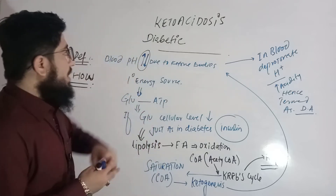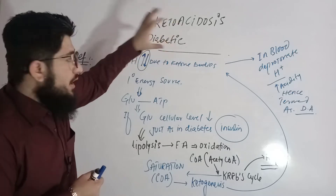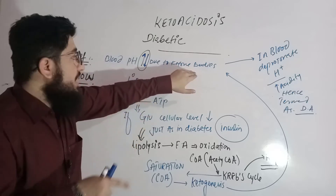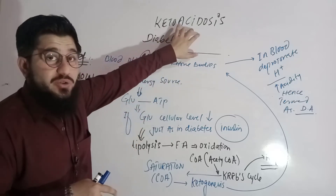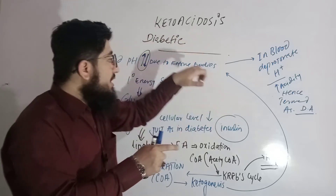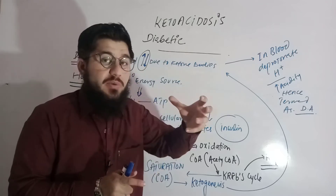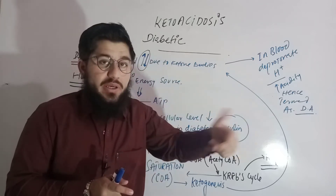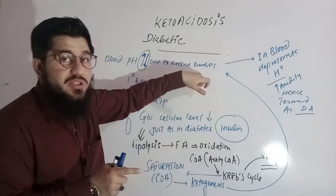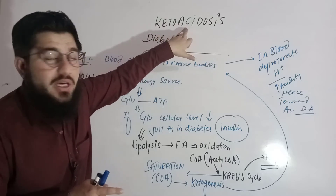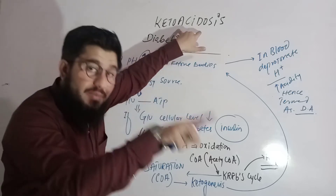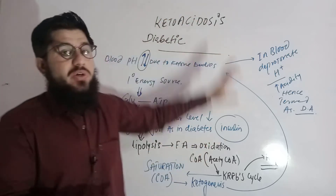Let's commence the lecture from the definition. What is diabetic ketoacidosis? If blood pH changes due to ketone bodies, that is called ketoacidosis. The term is acidosis — the pH becomes acidic. These ketone bodies are responsible for causing the pH to become acidic, which is why this is called ketoacidosis. If this ketoacidosis is because of diabetes, then it will be named diabetic ketoacidosis.